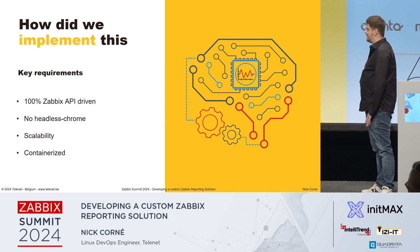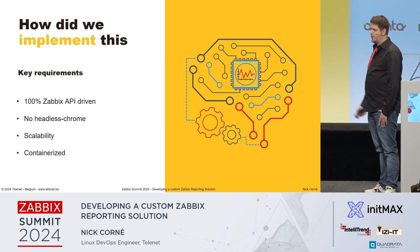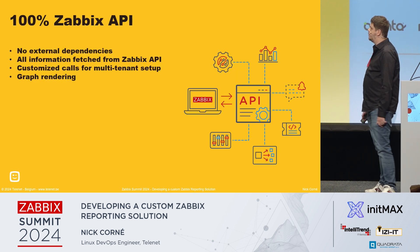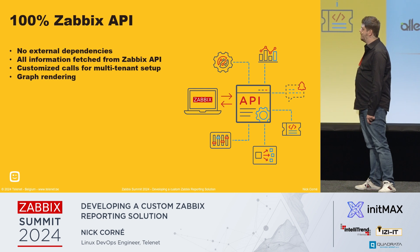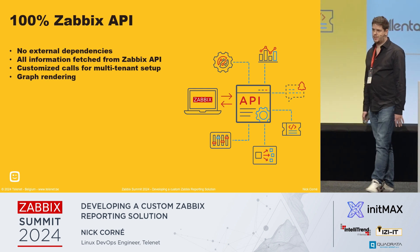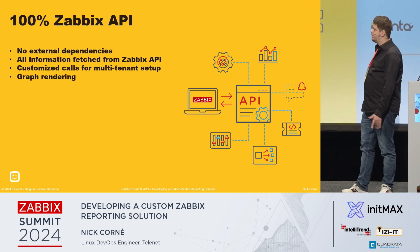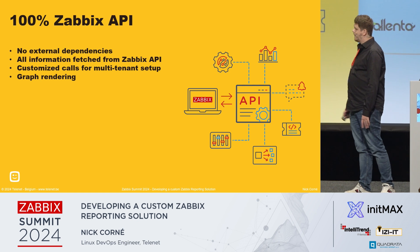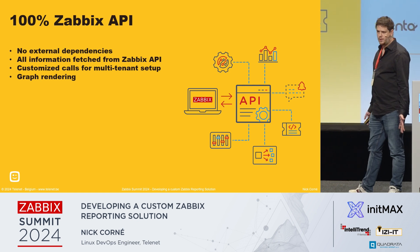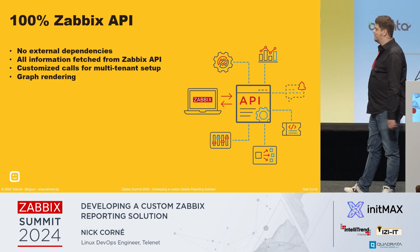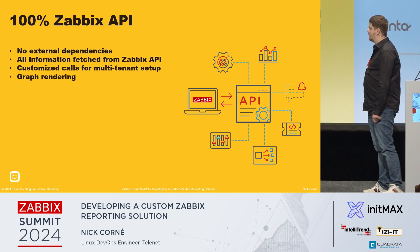So how did we implement that? We had a few key requirements based on our experiences with Avenue. The first thing was we wanted it to be 100% Zabbix API driven. We didn't want any external dependencies — all the information in the report tool will be fetched from Zabbix directly. We did have some customized calls to handle the multi-tenant setup, but that's all based on native API calls; we just handle the data and transform it as needed.